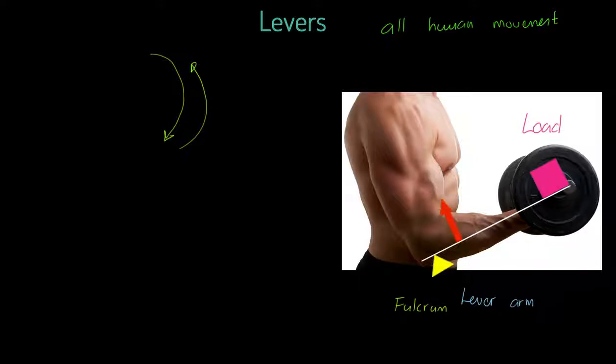And then finally, we need this red arrow thing. And this is what we call an effort. Now the effort is coming from this muscle here, which of course we know is the bicep, which is inserting down over here and it's pulling up in this direction. It's actually inserting down onto the radius and pulling up in that direction. And we know that's a contraction of the bicep.